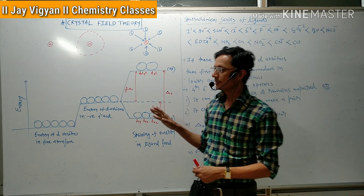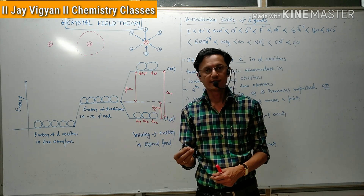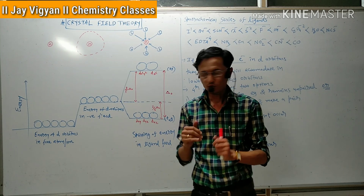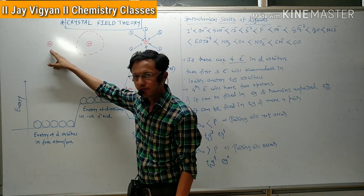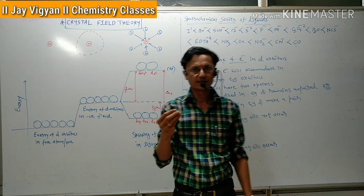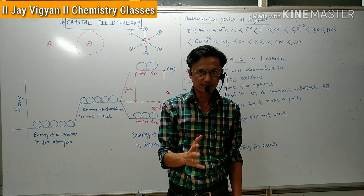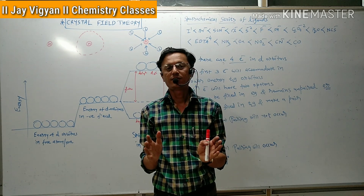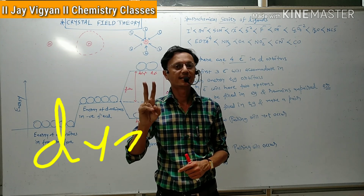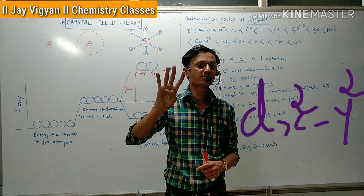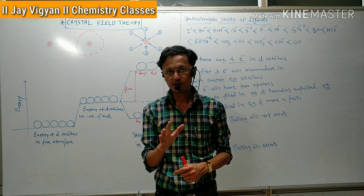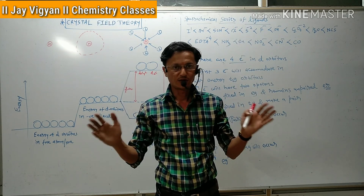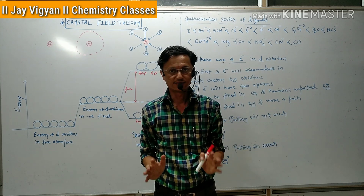Crystal field theory is the theory in which there is a belief that there is an ionic bond between the metal and the ligand. If the metal atom or ion is alone, we know that all 5 d-orbitals have the same energy. Therefore they are known as degenerate orbitals. We know the names of these 5 d-orbitals: dxy, dyz, dxz, dx²y², and dz². These 5 d-orbitals have the same energy when an atom or ion is alone, not surrounded by any ligands.